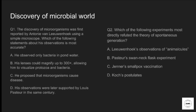The first question is from the topic: discovery of the microbial world. The question says: the discovery of microorganisms was first reported by Anthony von Leeuwenhoek using a simple microscope. Which of the following statements about this observation is most accurate? Option A: he observed only bacteria in pond water. Option B: his lenses could magnify up to 3000 times, allowing him to visualize protozoa and bacteria. Option C: he proposed that microorganisms cause disease. Option D: his observations were later supported by Louis Pasteur in the same century. The correct answer is option B.